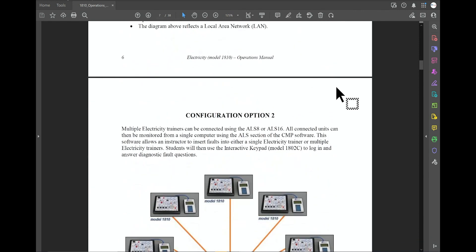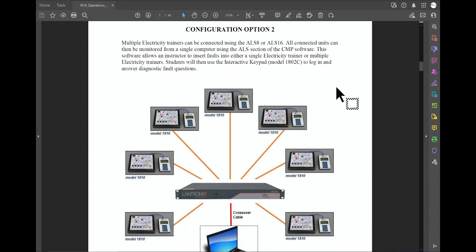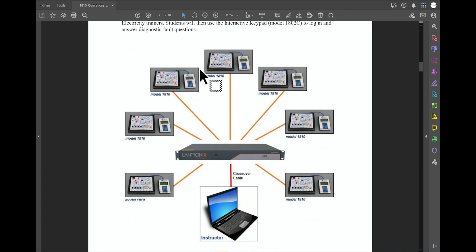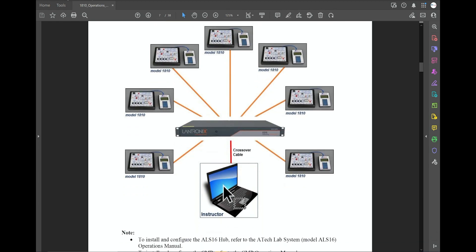For this video we're going to focus on configuration option two, which is where you'll be utilizing the 1810 trainer along with the keypad, and then you can have the trainers ethernet together through our hub port and operated by the instructor computer as well to log in all the answers.